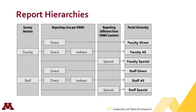One big change this year is that we have six different hierarchies. Faculty and staff receive different versions of the survey, plus direct reports are separated from indirect or roll-up reports. One hierarchy is called faculty-direct, which contains faculty that report directly to a particular manager. Then there's faculty-all, which includes all faculty — direct and indirect — that roll up to a manager. There's also a faculty-special reports hierarchy that contains any faculty shadow hierarchy reports. Shadow hierarchy reports don't follow a reports-to structure from the HRMS system — in other words, they break the hierarchy.